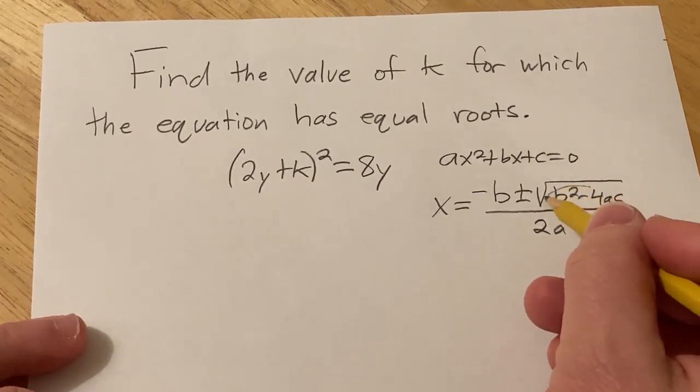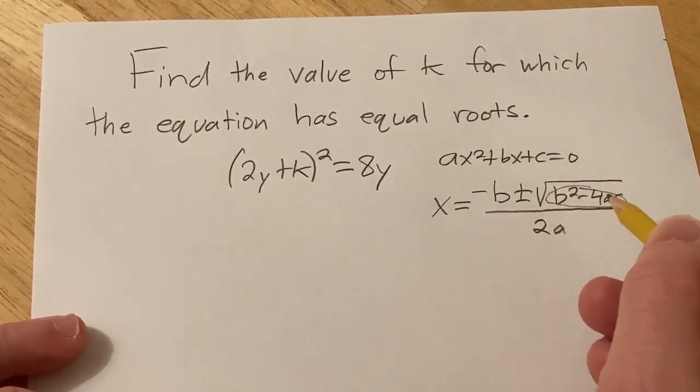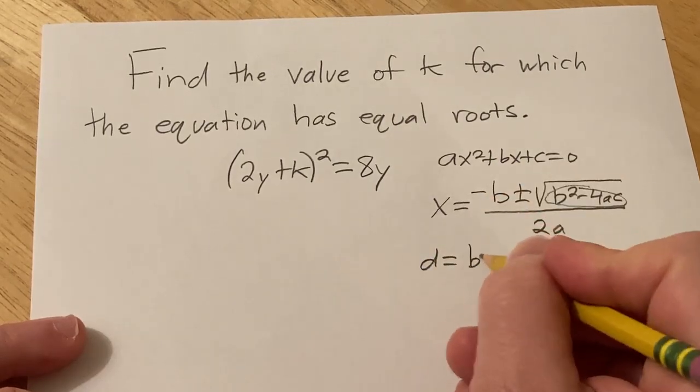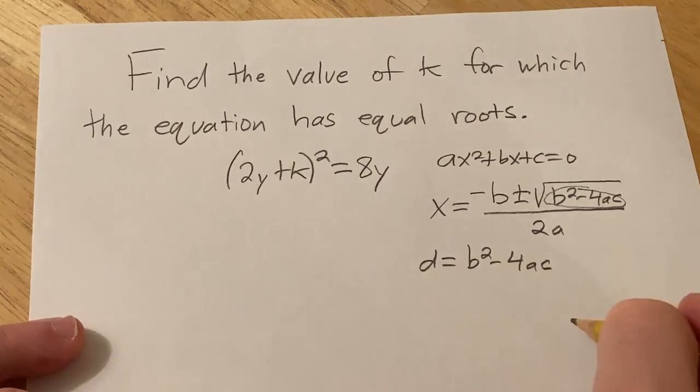And so here, this piece that you see inside the square root, this is special, it's given a name, people call it the discriminant, and it's given by b² - 4ac.